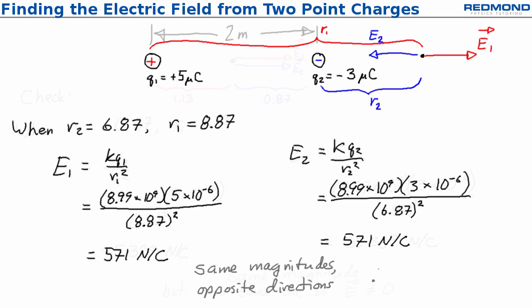Therefore, the net electric field is 0 at a point 6.87 meters to the right of Q2. Done.